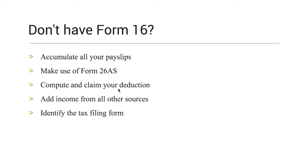Suppose you invest in savings schemes, you can get a deduction of up to ₹1,50,000. Then add income from all other sources — for example, if you invest in a fixed deposit, include the interest and other sources of income. If you have house property, include that house property income as well. Accumulate all that income.